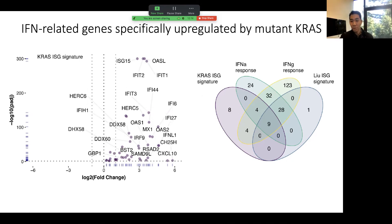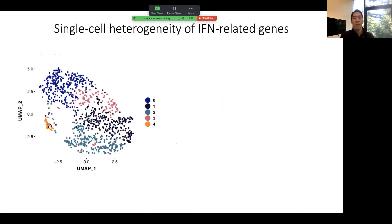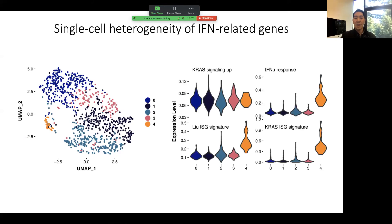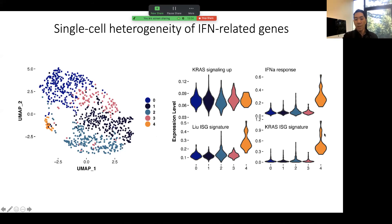We wanted to understand the heterogeneity of the response of these lung cells to oncogenic RAS signaling. Here I'm showing 10X single-cell RNA sequencing data; in the UMAP you can see the different clusters or cell states that arise within these mutant KRAS lung cells. Interestingly, KRAS signaling genes are relatively uniformly upregulated across the entire population. But what was quite surprising is that the interferon-stimulated genes were only highly upregulated in a subset of cells — predominantly in cluster 4 — though other clusters do exhibit some ISG signal as well.